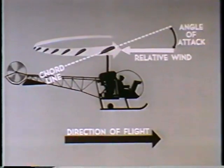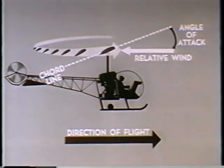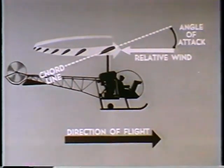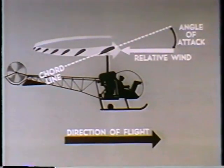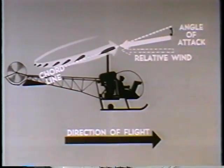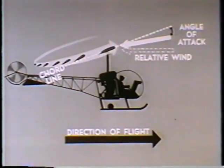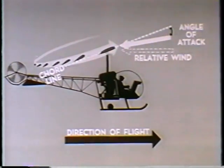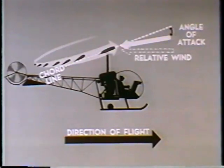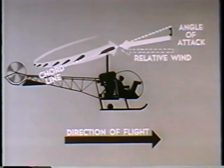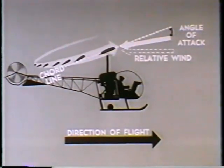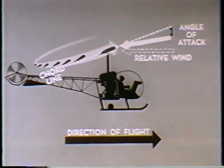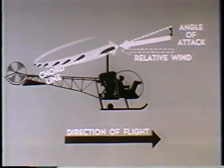However, when the advancing blade is allowed to flap up at a high angular velocity, there is a change in the direction of the relative wind. This new path taken by the blade through the air results in a smaller angle of attack. A smaller angle of attack results in a reduction of the amount of lift. Thus, simply by allowing the advancing blade to flap up, we reduce the amount of lift which it produces. It is this difference in the relative wind caused by the flapping action which reduces the amount of lift.